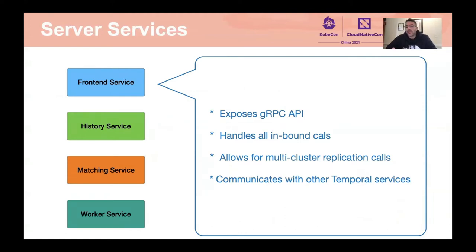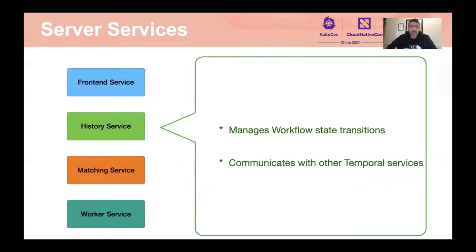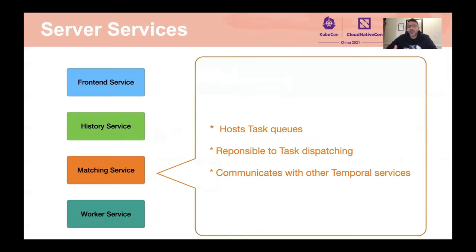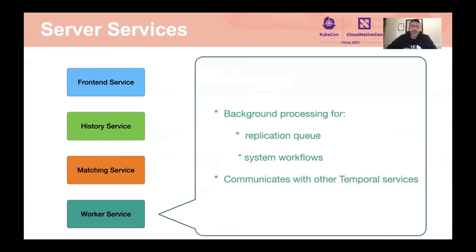The frontend service allows for things like multi-cluster replication. The history service manages workflow state transitions — Temporal does not execute your code directly, but stores important execution events that allow you to resume workflow execution and deal with failures. The matching service provides task queues, which are dynamically generated endpoints through which you can host multiple types of workflows. The worker service is a background processing service that includes system workflows, replication queues, and related functions.